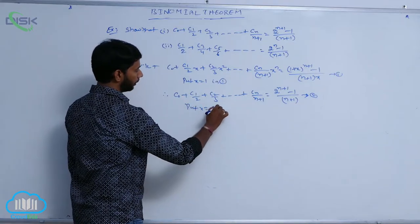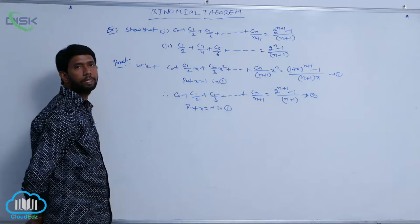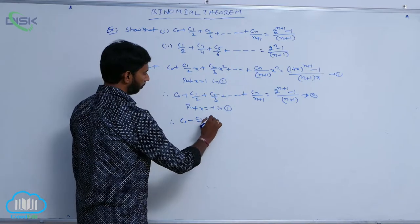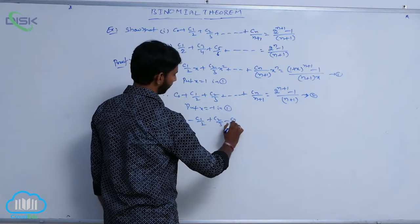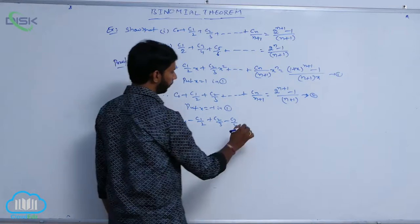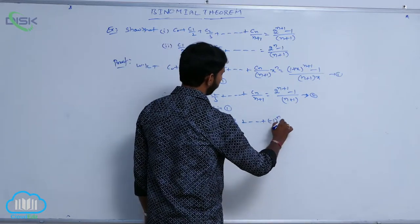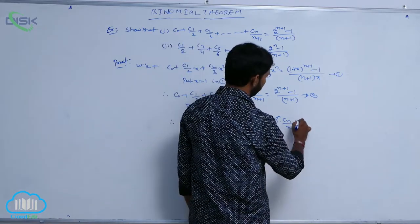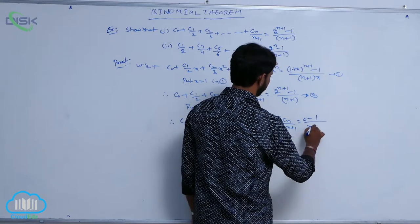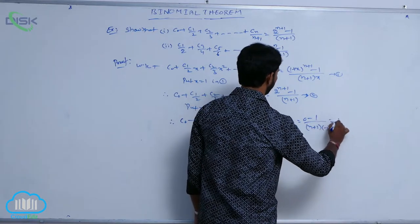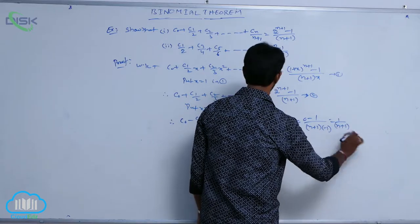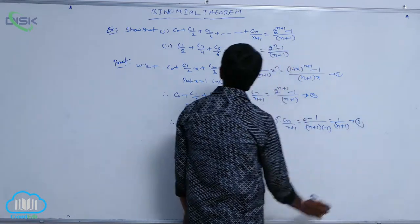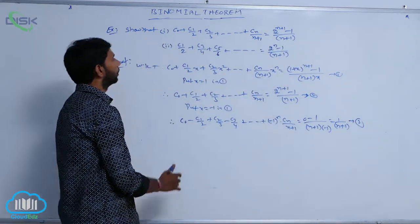Put x = -1 in condition number 1. Therefore, C₀ - C₁/2 + C₂/3 - C₃/4 + ... + (-1)ⁿ · Cₙ/(n+1) = [0 - 1]/[(n+1)·(-1)] = 1/(n+1). Consider this as condition number 3.